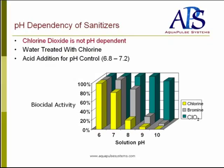Chlorine dioxide is not pH dependent. As the chart shows, water treated with chlorine requires acid addition for pH control between 6.8 and 7.2, which are the effective ranges for chlorine. You can see that chlorine dioxide is effective from pH 6 to pH 10 without any acid addition or pH control.